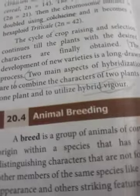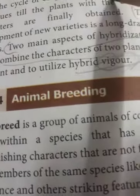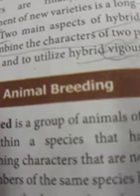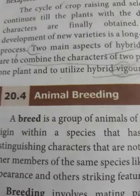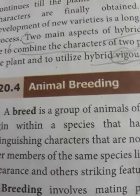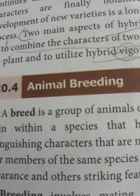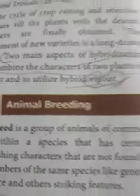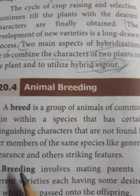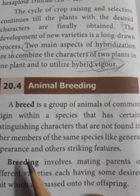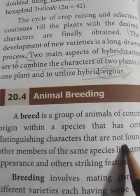Now we are going to discuss animal breeding. Just as we do hybridization in plants, we do the same in animals for the same purpose — to get more and more products. Animal breeding is the process by which crosses are made between different animals of the same species or between different breeds of the same species. We should also know what a breed is: a breed is a group of animals of common origin within a species that has certain distinguishing characters not found in other members of the same species.